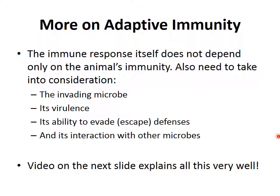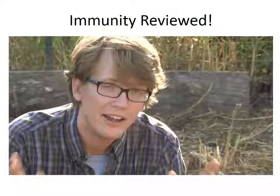Just another note on adaptive immunity: the immune response doesn't depend just on the animal's immunity — we also need to consider the invading microbe itself, its virulence, its ability to evade or escape defenses, and its interaction with other microbes. These factors all affect how well our immune system works against a particular pathogen. Now I'm going to let you watch a Crash Course Biology video that explains basic immunity really well. It will summarize everything and hopefully answer any questions you have.